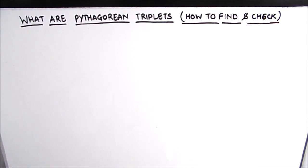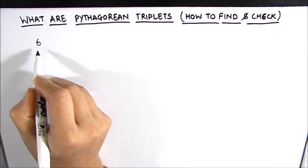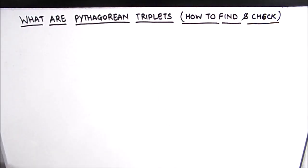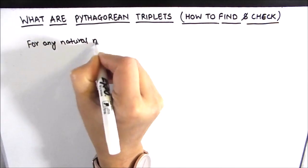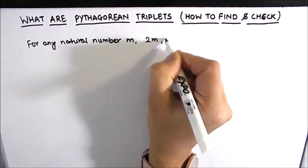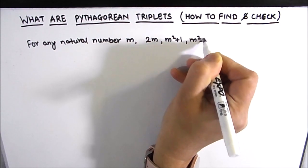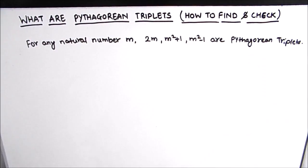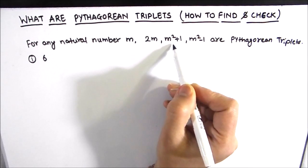Suppose we have been given the number 6 and we need to find the Pythagorean triplets for this number. The method for finding Pythagorean triplets is very easy. For any natural number m, the three values 2m, m²+1, and m²−1 are Pythagorean triplets. Let us now solve a few examples.